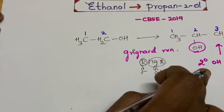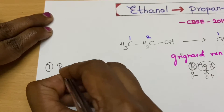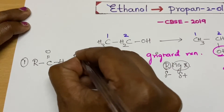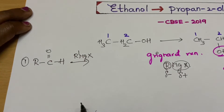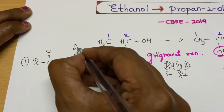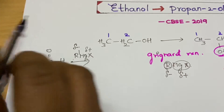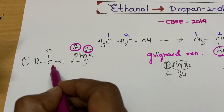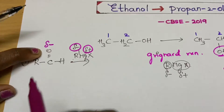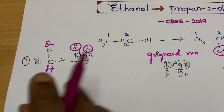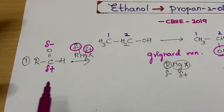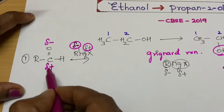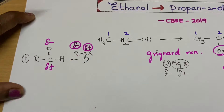Grignard reactions with carbonyls give secondary and tertiary alcohols. With an aldehyde carbonyl, the Grignard reagent reacts as follows: the R group has partial negative charge and the MgX has partial positive charge. In the carbonyl, oxygen is more electronegative, so oxygen has partial negative charge and carbon has partial positive charge. Opposite charges react — R (negative) attacks the carbonyl carbon (positive), and MgX (positive) bonds to oxygen (negative).